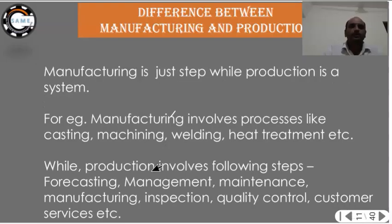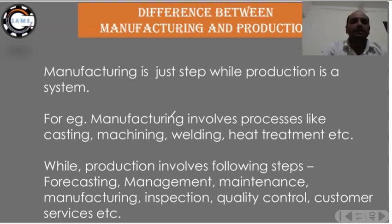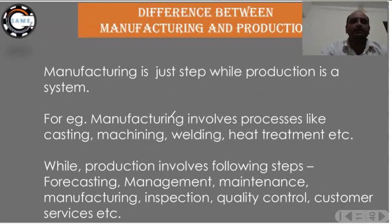Another difference: manufacturing is just one step, while production is a system. In manufacturing, you simply convert raw material into finished product. But in production, you have to consider sales, marketing, industrial engineering, and everything else. That is why production is a separate branch, different from the mechanical field.